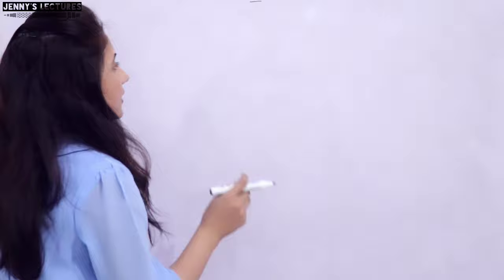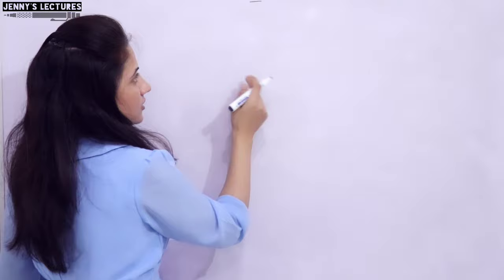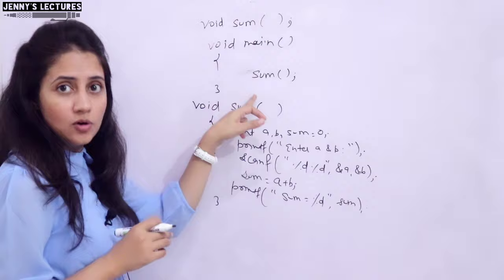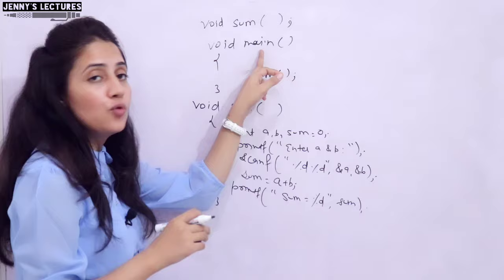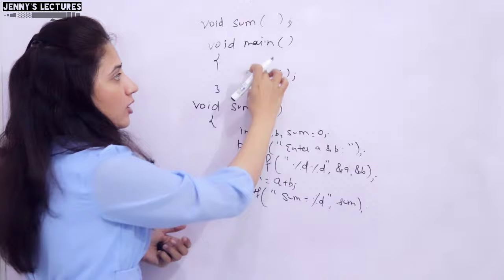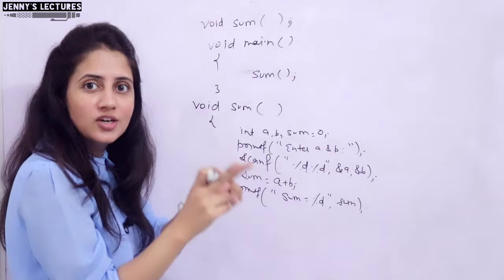Let's take one example and discuss function definition in C — the same example from the previous video. I'm taking a function named sum, and in the main function, I am calling that function. I asked you a question in the previous video: main is what? Main is a user-defined function; it is not a predefined function.